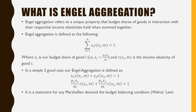So in our simple two-good case of Engel aggregation, we end up with our budget share of good 1 times the income elasticity of good 1, plus the budget share of good 2 times the income elasticity of good 2. This is a statement for any Marshallian demand that satisfies the budget balancing condition, otherwise referred to as Walras's Law.